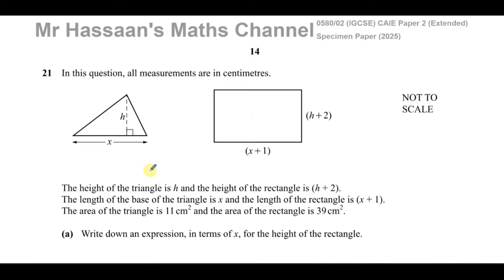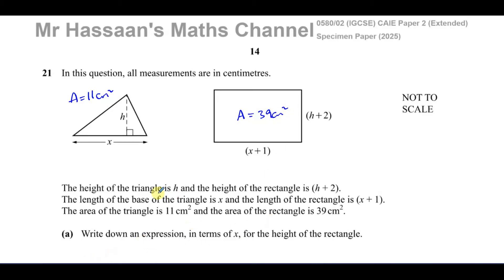We're told all measurements are in centimetres. We have a diagram showing a triangle and a rectangle. The height of the triangle is h, the height of the rectangle is h plus 2, the base of the triangle is x, and the length of the rectangle is x plus 1. The area of the triangle is 11 cm² and the area of the rectangle is 39 cm².